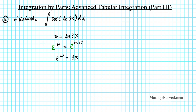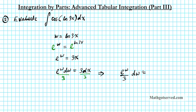Now let's differentiate both sides. If I differentiate E to the W, I get E to the W dW. On the right side, if I differentiate 3x, I get 3 dx. I need dx isolated so I can substitute it, so divide both sides by 3. That gives us E to the W over 3 dW equals dx.